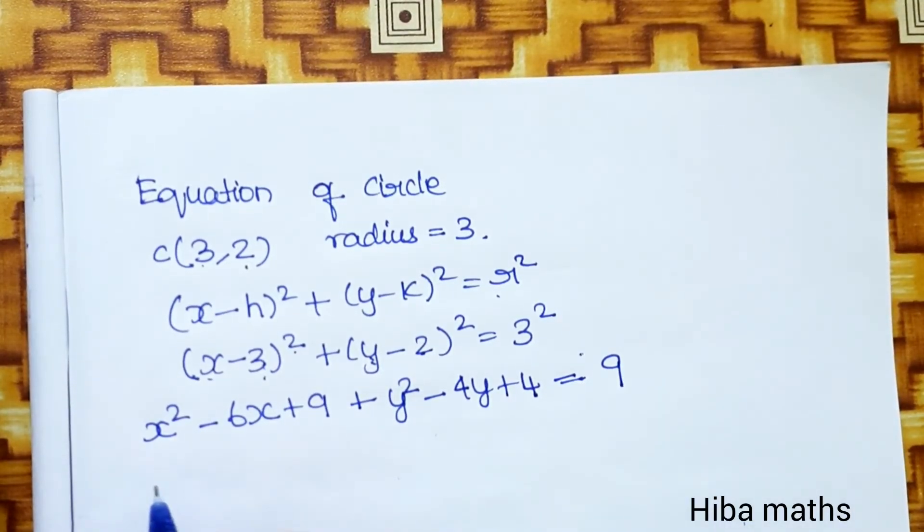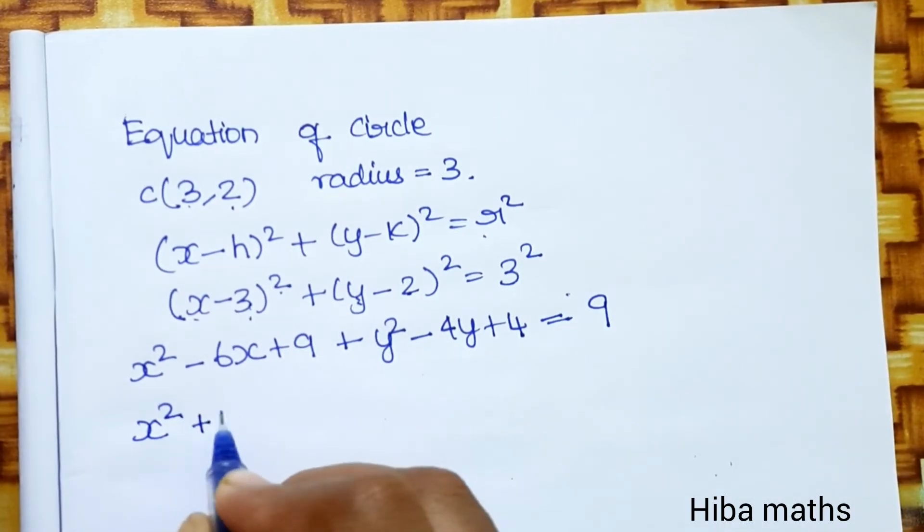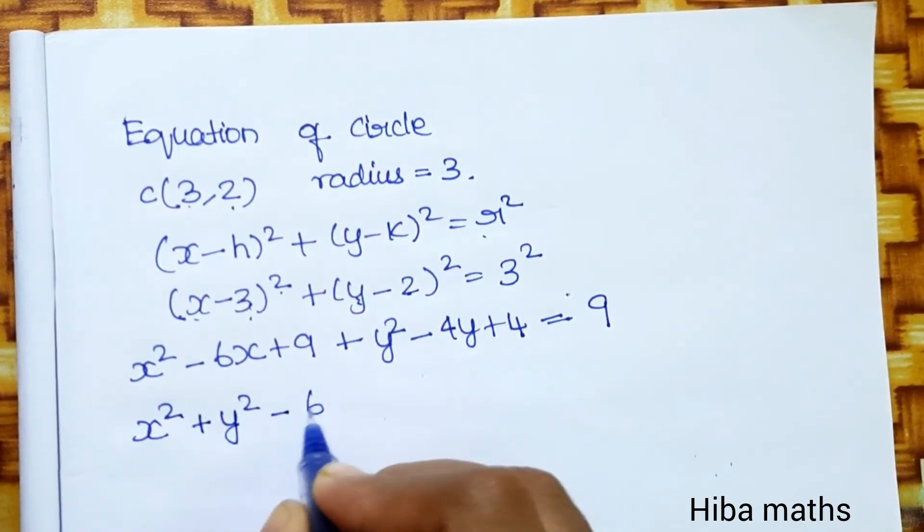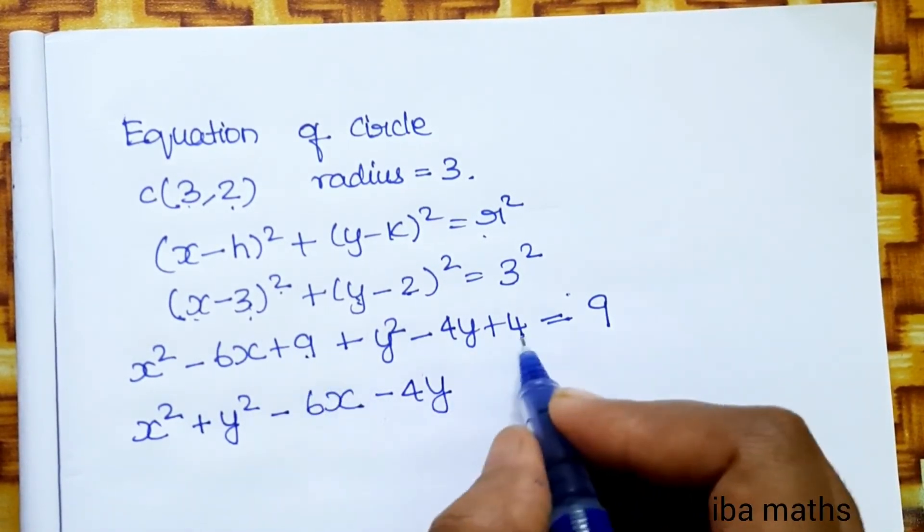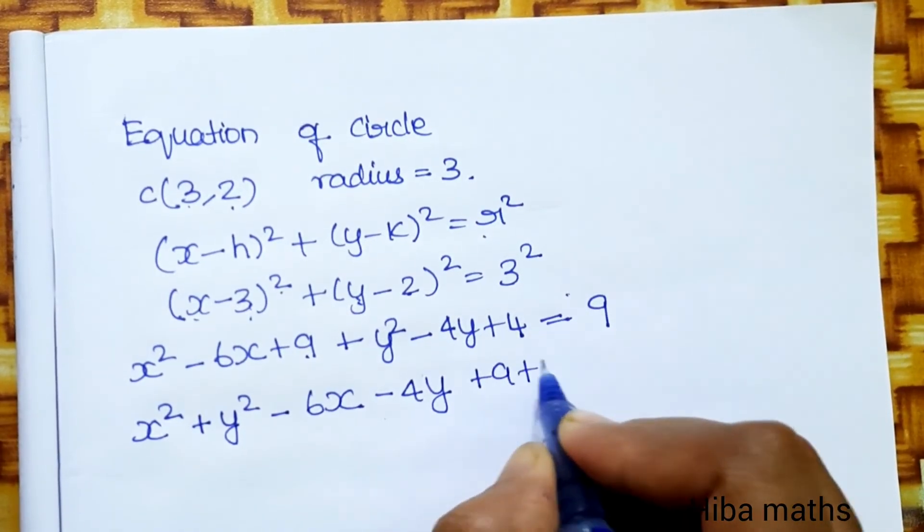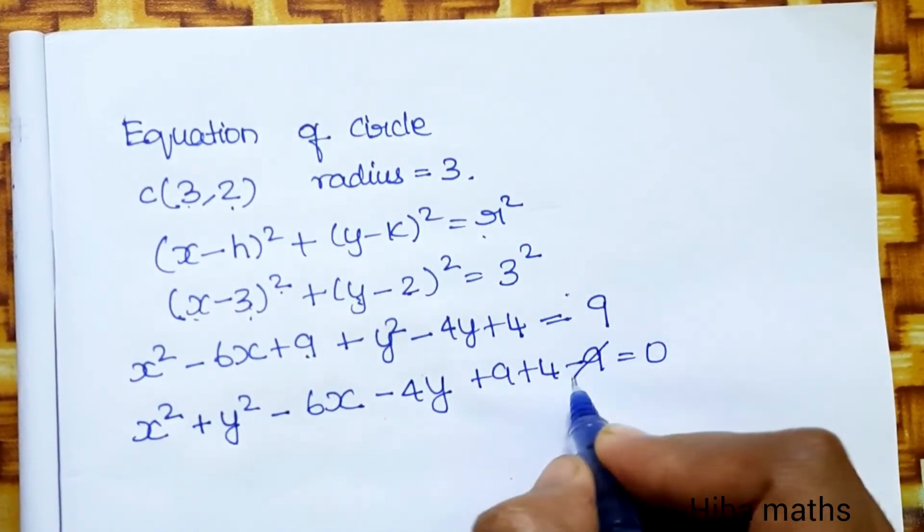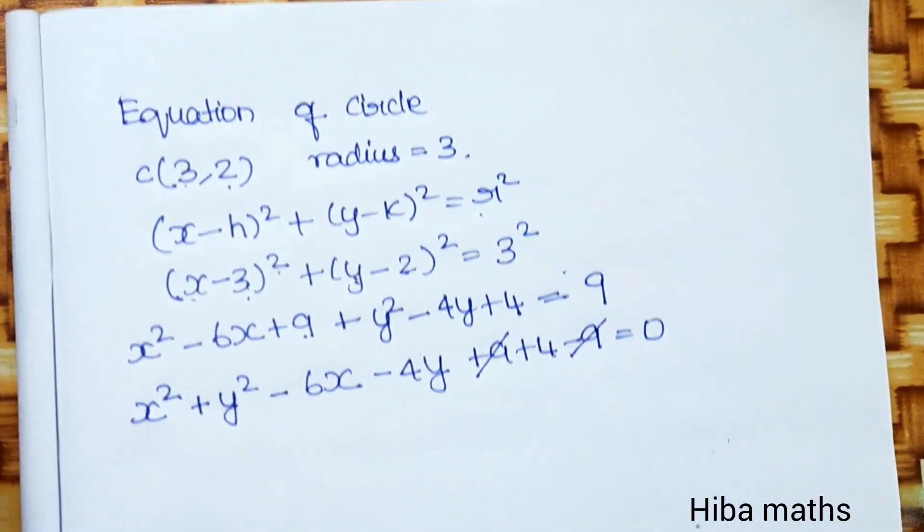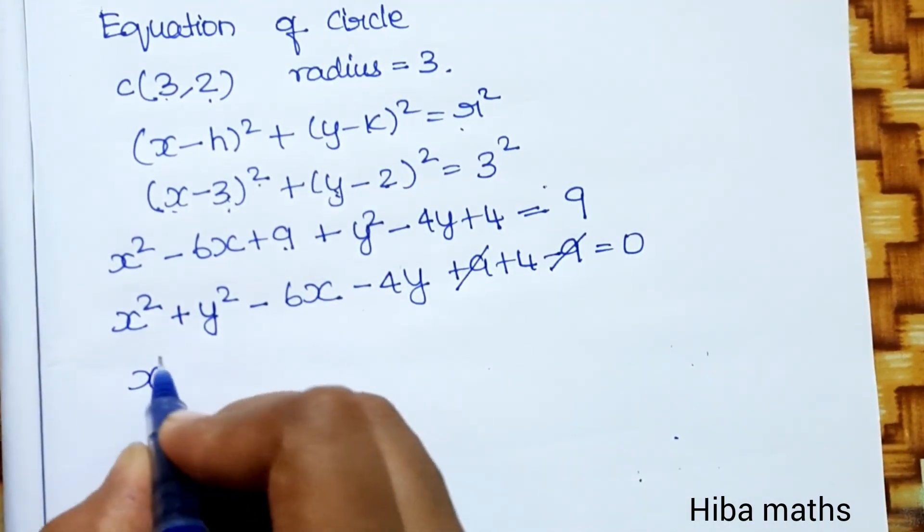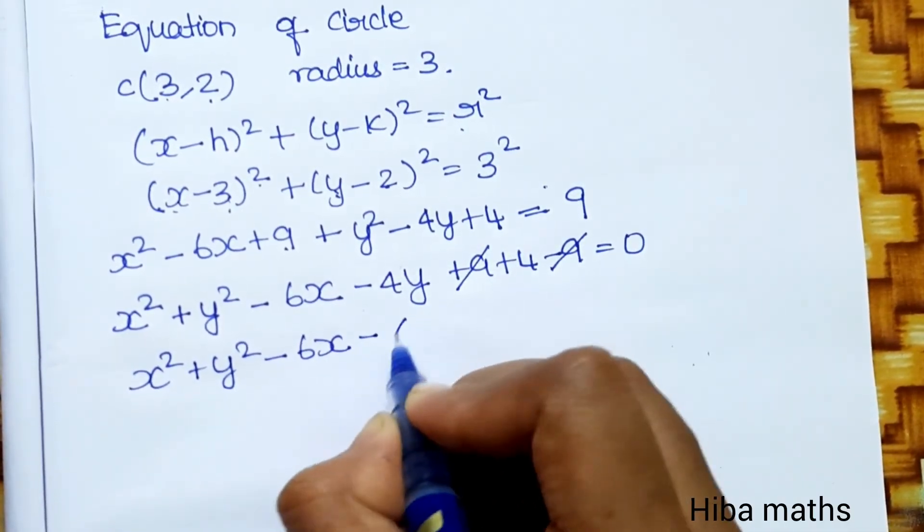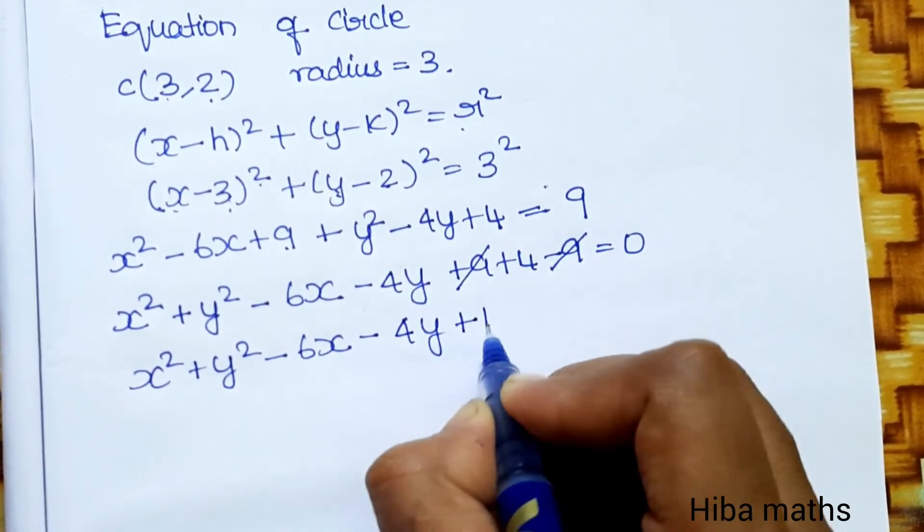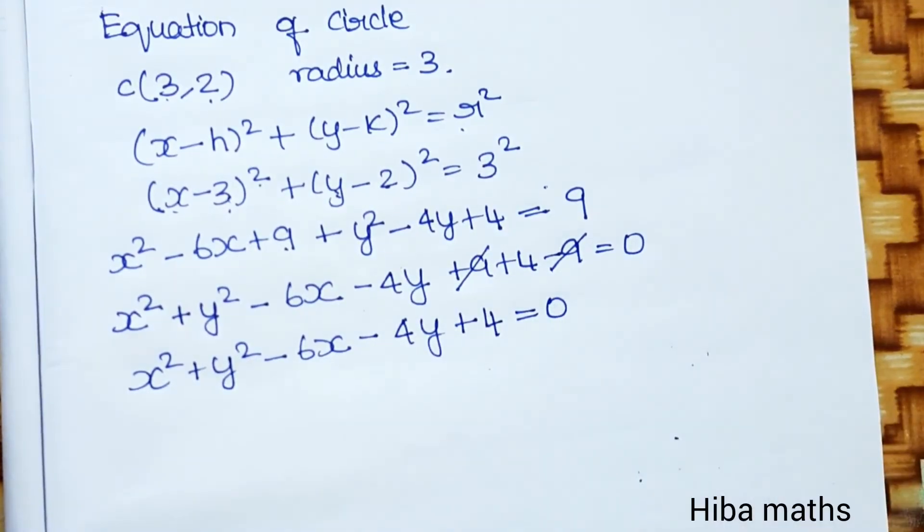Rearranging the terms: x²+y²-6x-4y+9+4=9. The 9's cancel out, giving us x²+y²-6x-4y+4=0. This is the required equation of the circle.